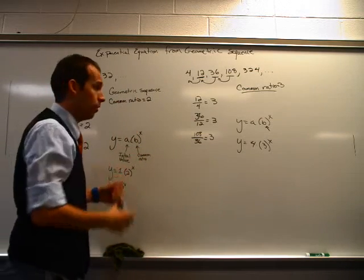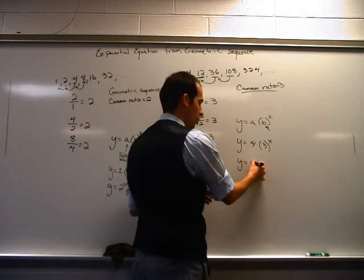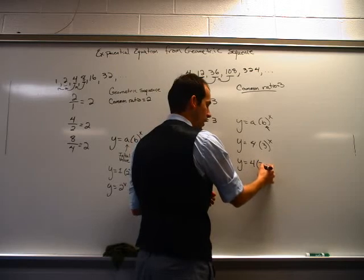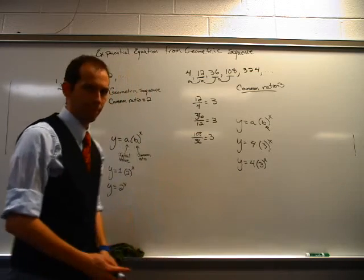I can do 1 times 2 to the x because 1 times anything is just anything. It's a rule that we have for 1. But here I can't do that. 4 is 4 and it complicates things. So I have here 4 times 3 to the x power, and I have to stop there. That's my equation.